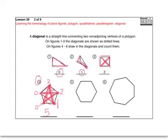Now do number five. I'll get you started — from this first corner, using the sprinkler method, I can connect to three other corners, so that's three new diagonals. Now go to the next corner and keep doing that all the way around the shape to see how many diagonals you come up with. Pause the video and turn it back on when you're ready to see the solutions.